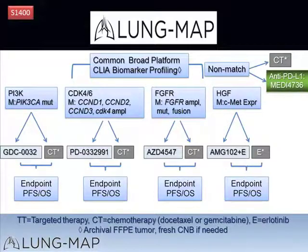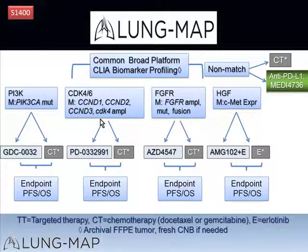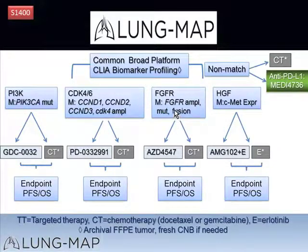The second arm of the targeted therapy is targeting CDK4/6, and the agent chosen is palbociclib, PD0332991. The selection criteria for this arm is cyclin D1, cyclin D2, cyclin D3 amplification, or CDK4 amplification. The third arm is targeting FGFR-amplified tumors, FGFR-mutated tumors, or FGFR gene fusion-positive tumors.